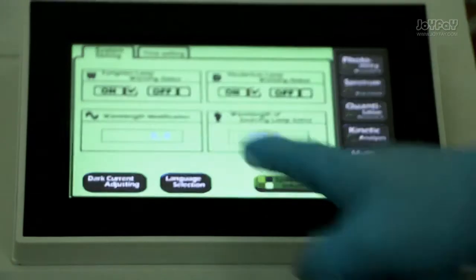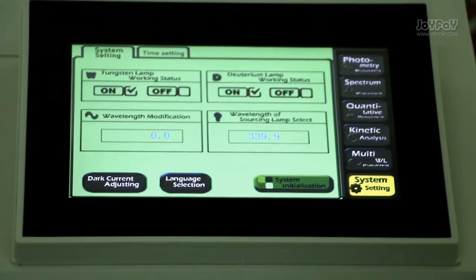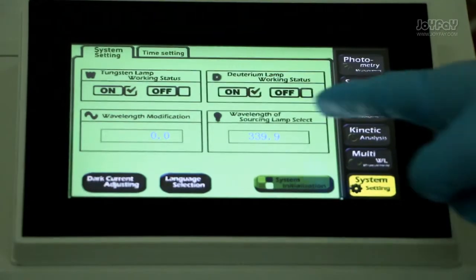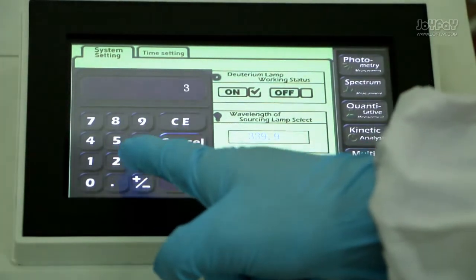Measure the standard value. The correction range is plus or minus 0.5 nm. Press the blank box to enter the wavelength in the world.